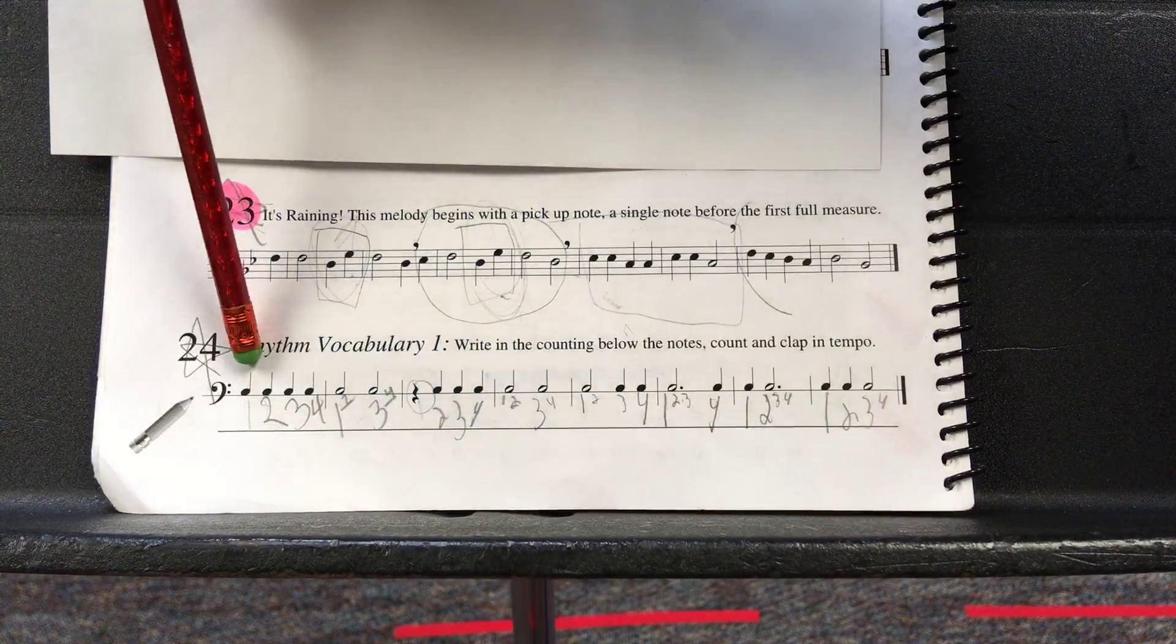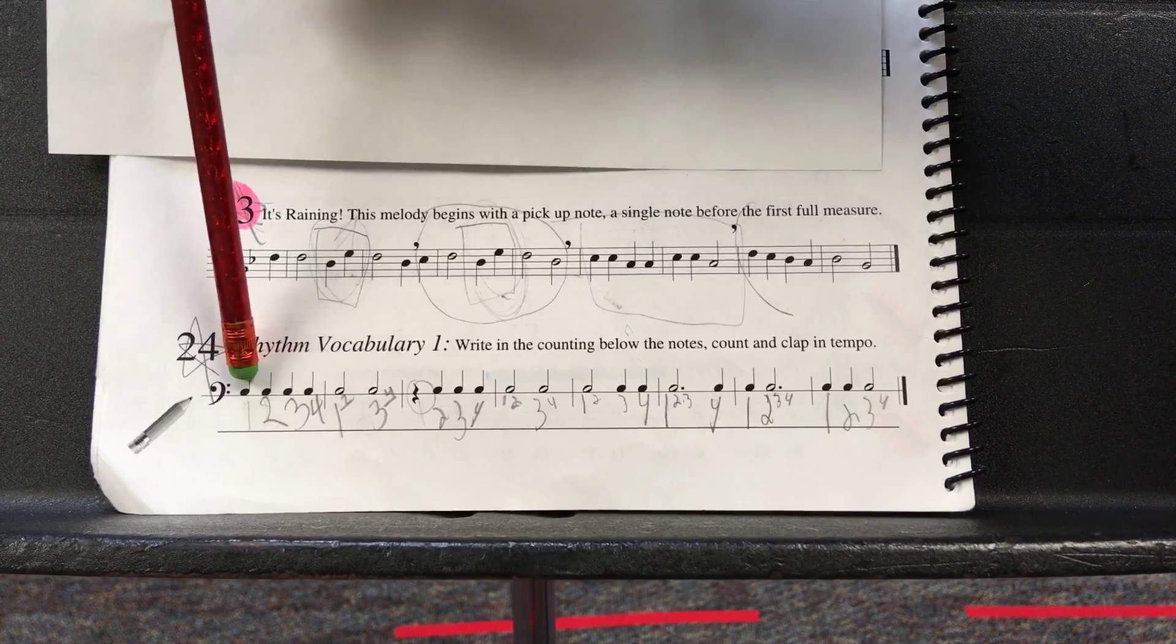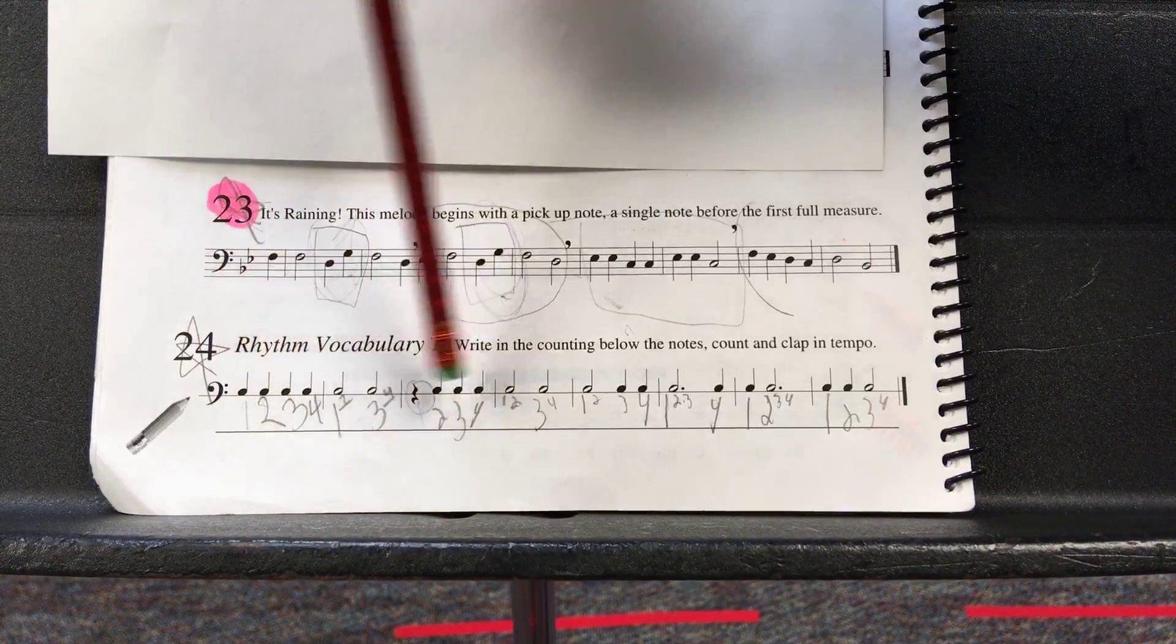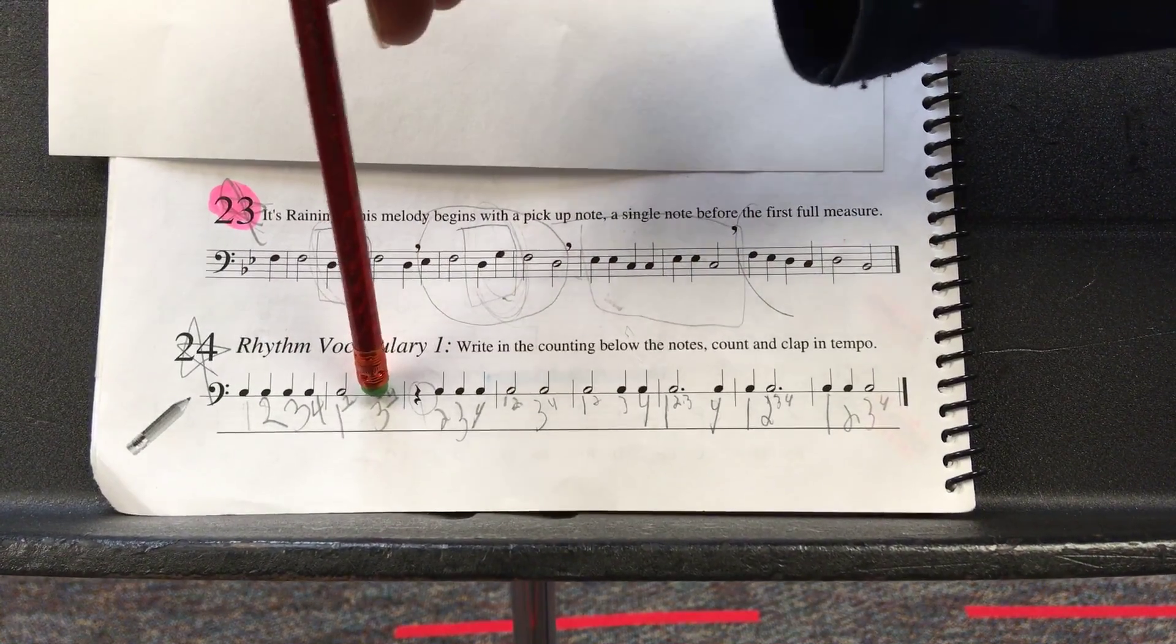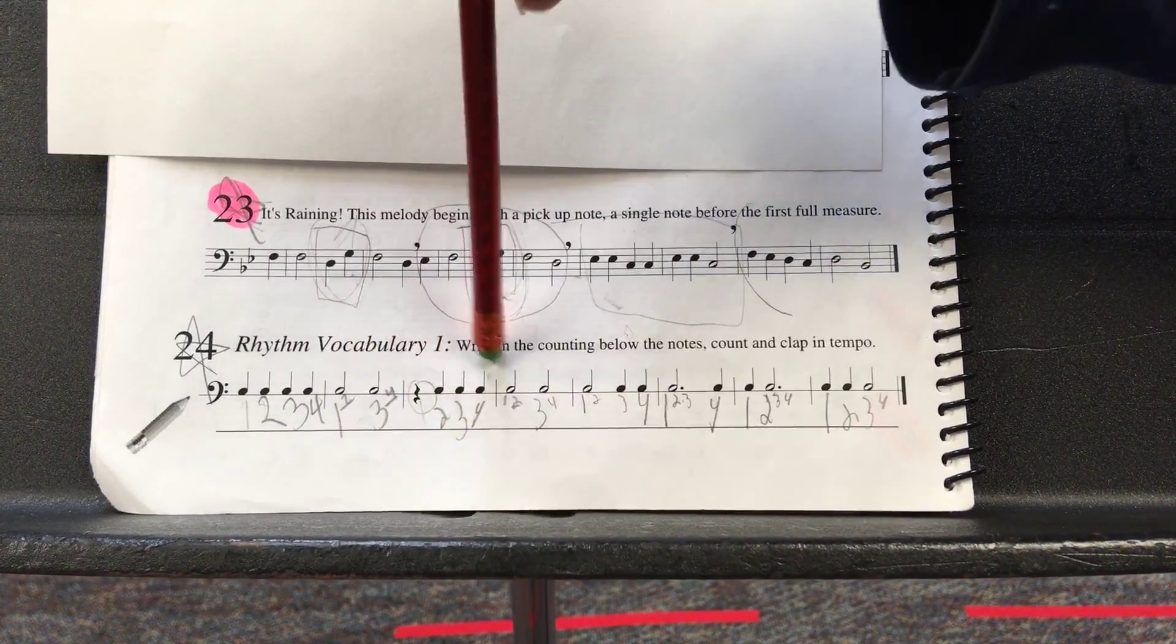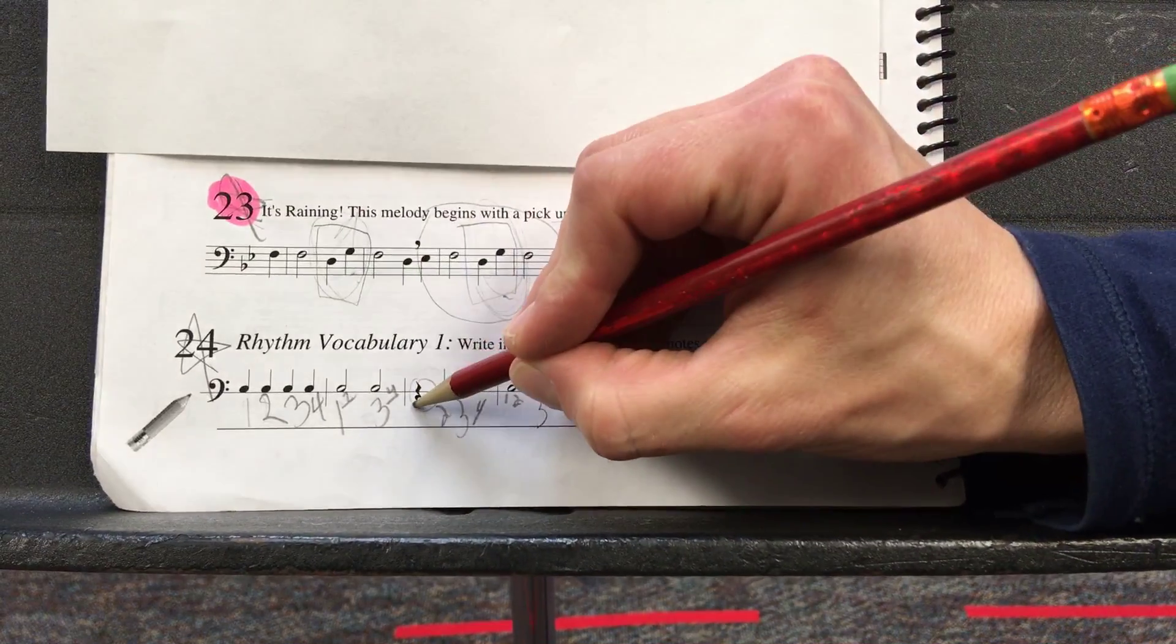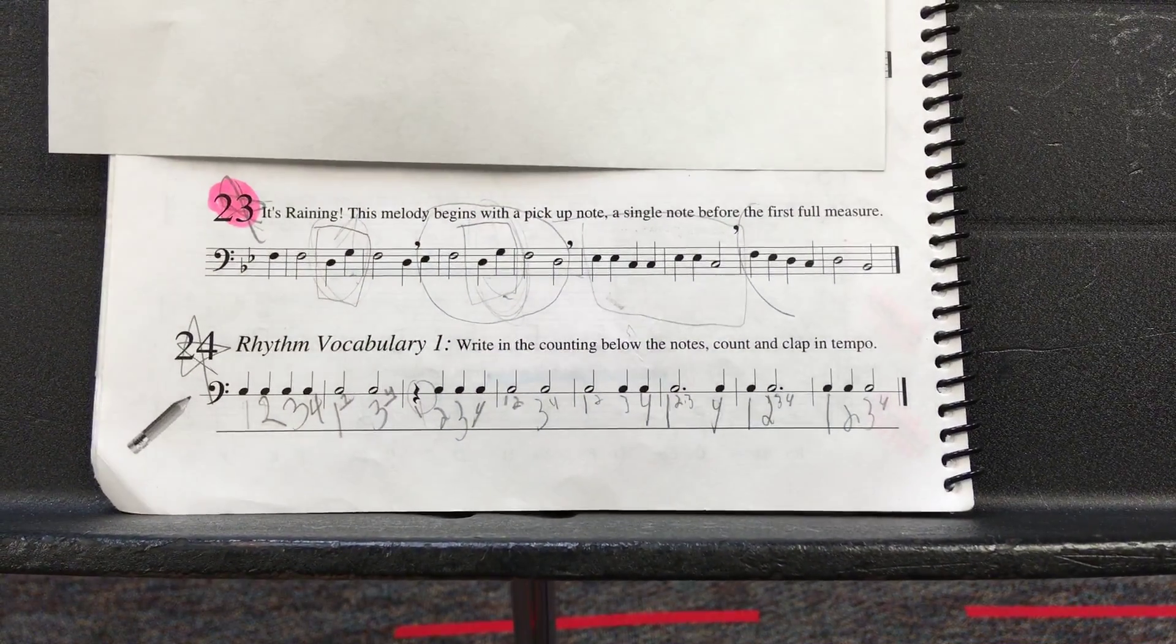At the bottom of the page, this is rhythm counting. You've done these with Mrs. Cabes. And you can see in the video, this person wrote 1, 2, 3, 4. 1, 2, 3, 4. 1, 2, 3, 4. The rest still counts as one. Thanks for watching, 5th graders. I hope this helped.